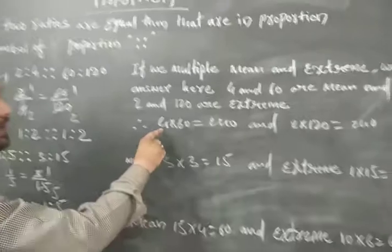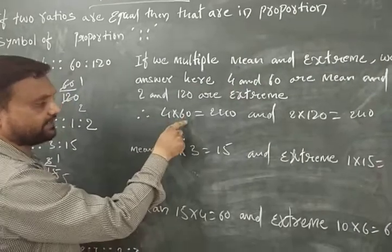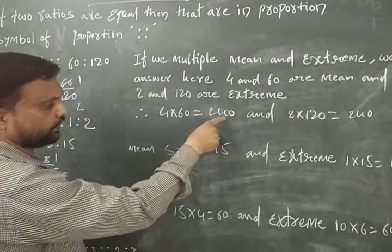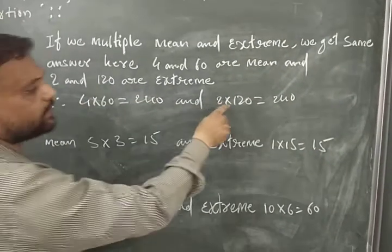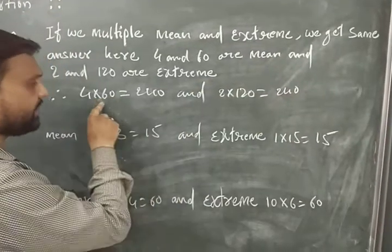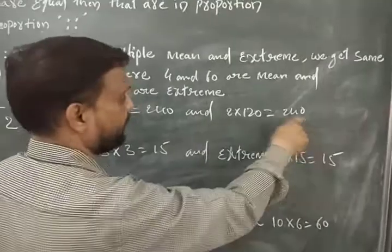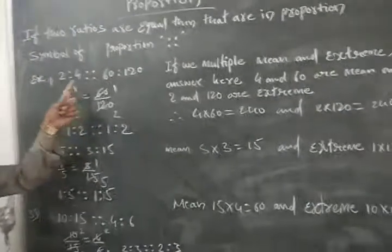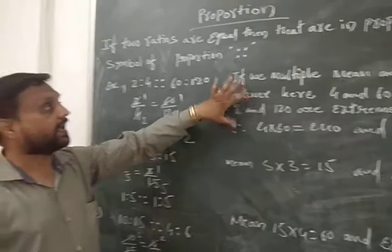Now we multiply the mean: four and sixty. Four multiplied by sixty equals two forty. And the extreme: two multiplied by one twenty equals two forty. So when you multiply the mean and when you multiply the extreme the answer is two forty — it means they are in proportion. We can verify proportion by ratio and by multiplying mean and extreme; if the answer is the same, they are in proportion.